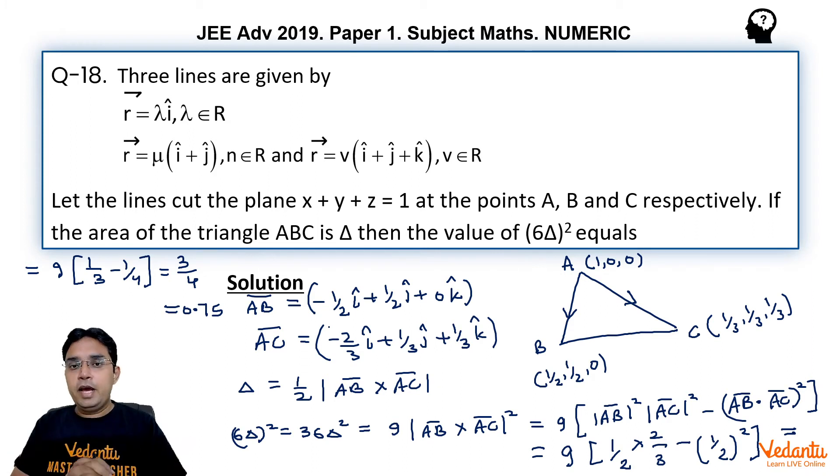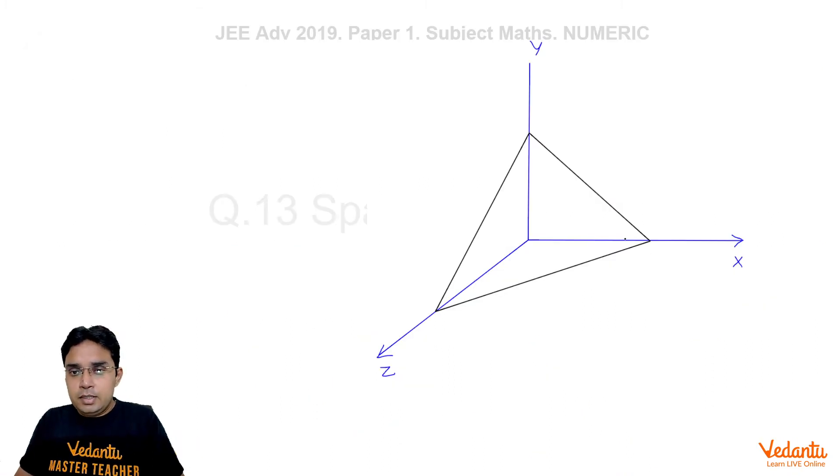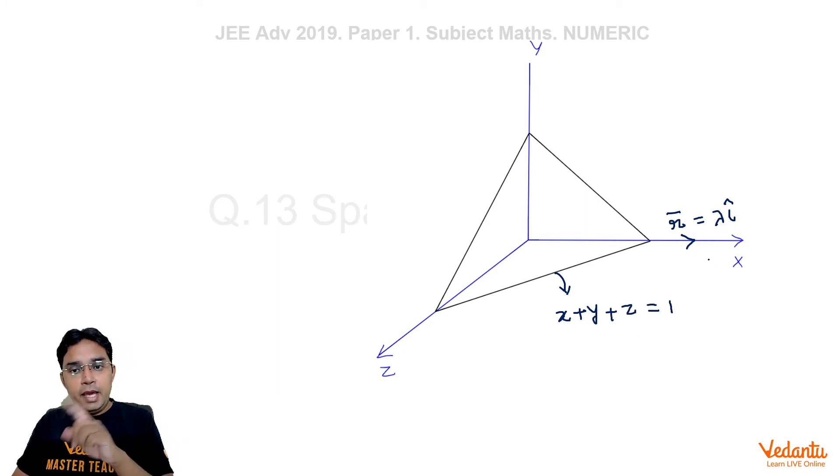So this is one method. I will tell you one more little interesting method for this question. Let us see what is that. The lines that are given to us, the first line is R equal to lambda i cap, so it is nothing but x axis. The plane that is given to us is x plus y plus z equal to 1. So it will be intersecting x axis, y axis and z axis at equal distance from origin. So these points are actually 1, 0, 0.